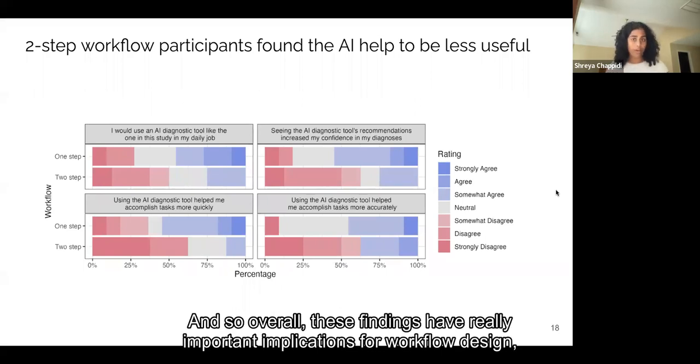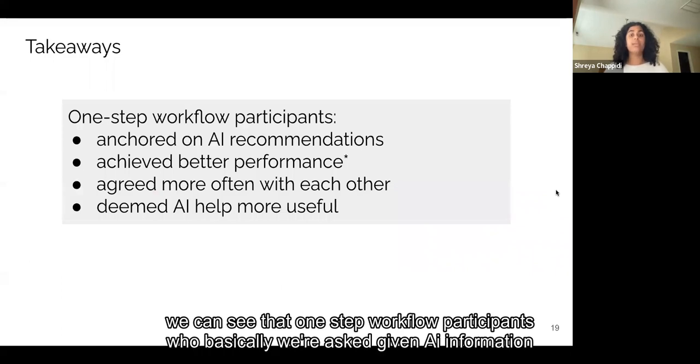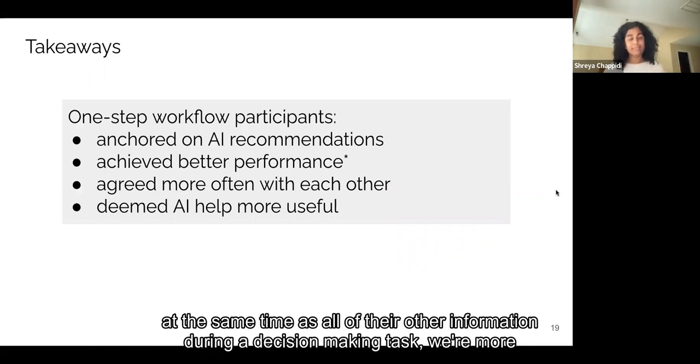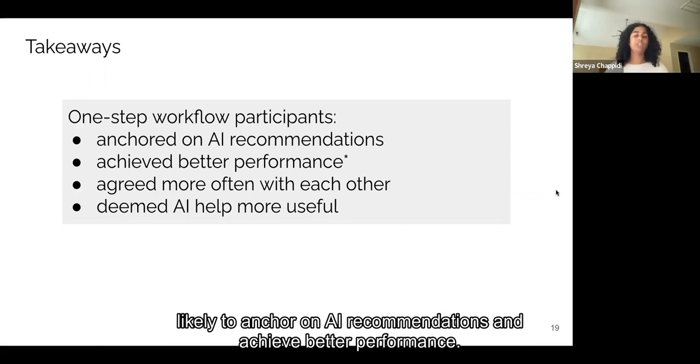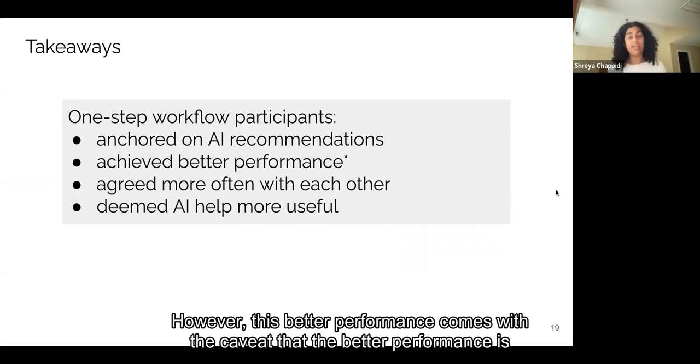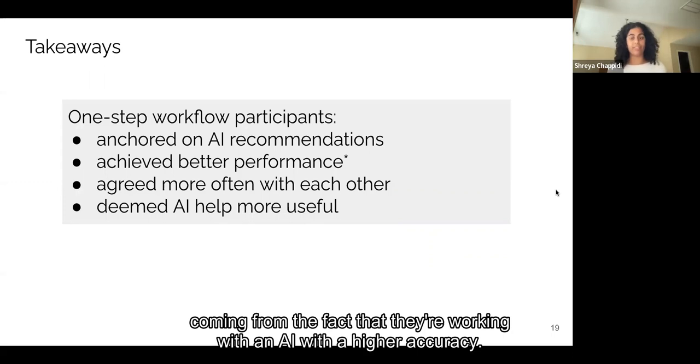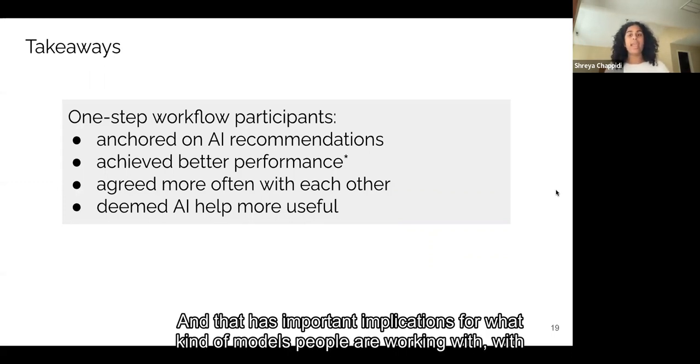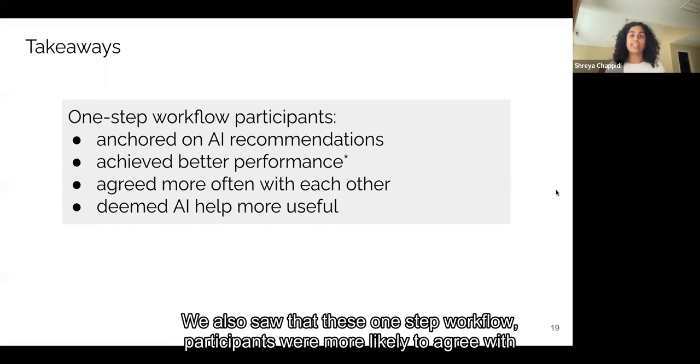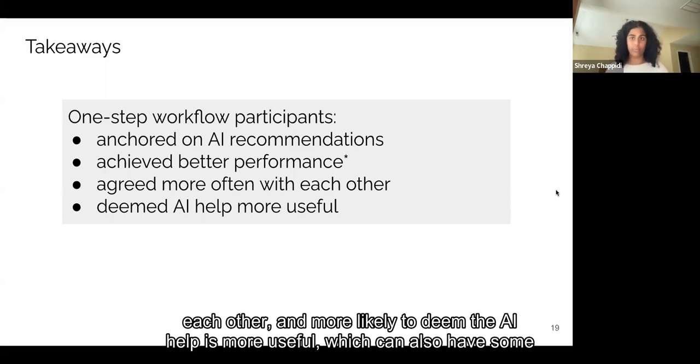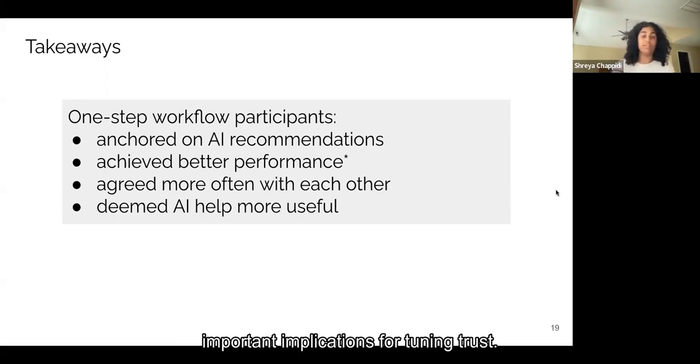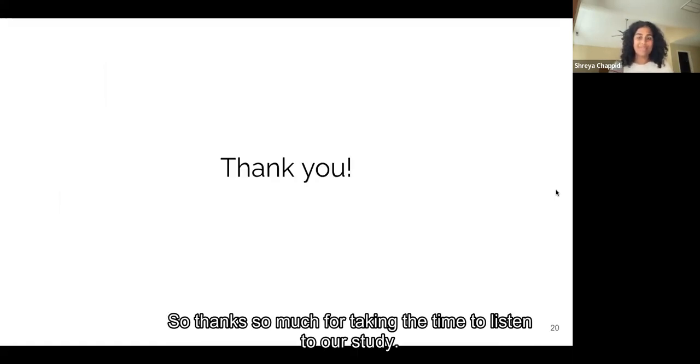And so overall, these findings have really important implications for workflow design. We can see that one-step workflow participants who basically were given AI information at the same time as all of their other information during a decision-making task, were more likely to anchor on AI recommendations and achieve better performance. However, this better performance comes with the caveat that the better performance is coming from the fact that they're working with an AI with a higher accuracy, and that has important implications for what kind of models people are working with during deployment. We also saw that these one-step workflow participants were more likely to agree with each other and more likely to deem the AI help as more useful, which can also have some important implications for tuning trust. So thanks so much for taking the time to listen to our study.